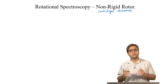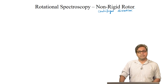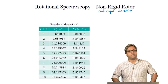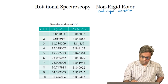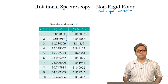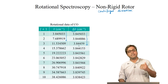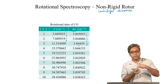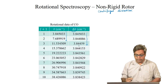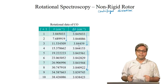Does this centrifugal distortion affect the rotational spectrum? To answer this, let us look into the real experimental data from the carbon monoxide rotational spectrum. Here, the frequencies of each line are given, and in the last column we have the frequency gap between the adjacent lines. We see that the gaps are steadily and more rapidly decreasing as we go to higher and higher J. This happens because the bond length is changing.